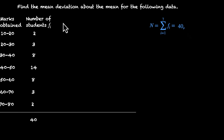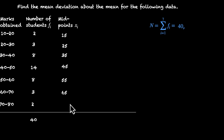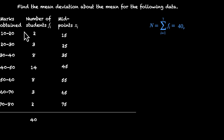For each class, let's find the midpoint to represent that class. For 10–20, the midpoint is 15; for 20–30, it's 25; then 35, 45, 55, 65, and 75. We are assuming all 14 students scored 45 marks, all 8 students in 30–40 scored 35 marks, and so on — since we have no way of knowing individual scores. This lets us treat the data as discrete, with 15 appearing twice, 25 appearing 3 times, 35 appearing 8 times, and so on.